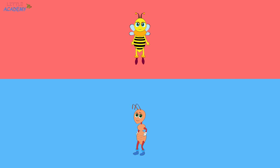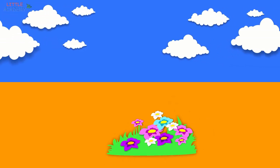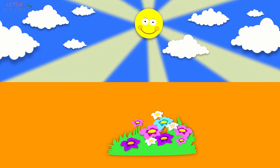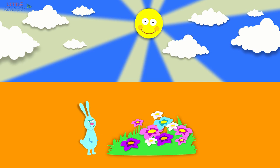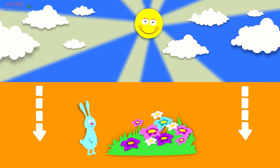Let's do it again. The color blue is above. The color orange is below. The clouds are above. The flowers are below. The sun is above. The bunny is below. This is up. And this is down. This is up. And this is down.